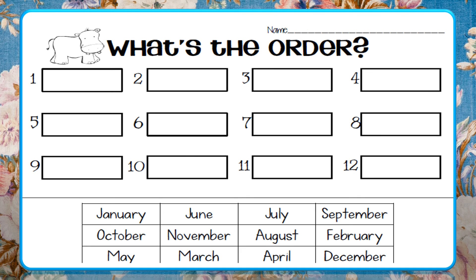Worksheet number three: you have to write the months of the year in their correct order. For example, the first month is January, so you will write January in the first box. Second month is February. Third month, March. Fourth month, April. Like this, you have to complete the rest of the order.